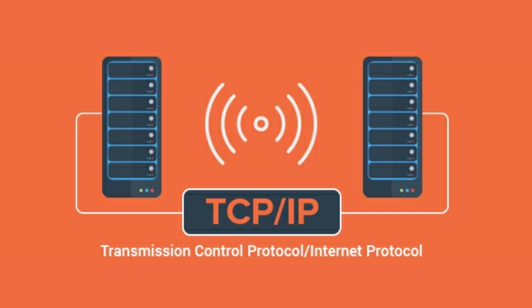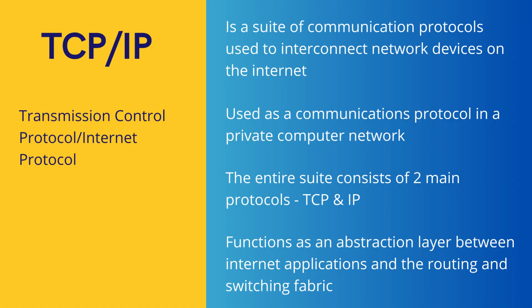The first protocol is TCP/IP — the acronym for Transmission Control Protocol and Internet Protocol. As the name says, it is a collection of two protocols. TCP/IP is a suite of communication protocols used to interconnect network devices on the Internet, and this protocol stack can be used as a communication protocol in a private company as well. It functions like an abstraction layer between the Internet applications and the routing and switching fabric.